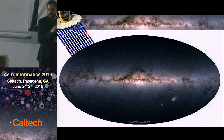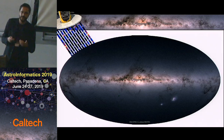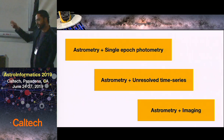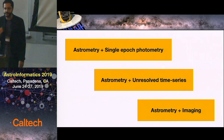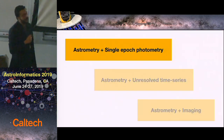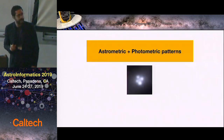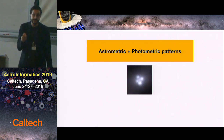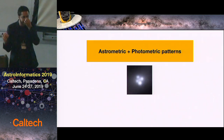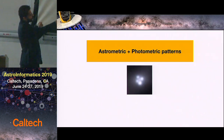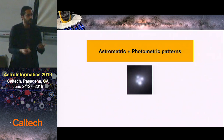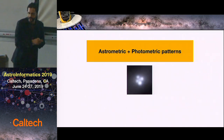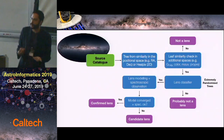From those 1.8 billion sources, we want to find the lensed quasars which will be just a handful in Gaia data release 2. We are developing three different techniques. The first uses astrometry and single-epoch photometry only. The idea is: can we find a method that, given the 1.8 billion sources, extracts patterns where the distances between images and flux ratios match what we expect a lensed quasar to produce?